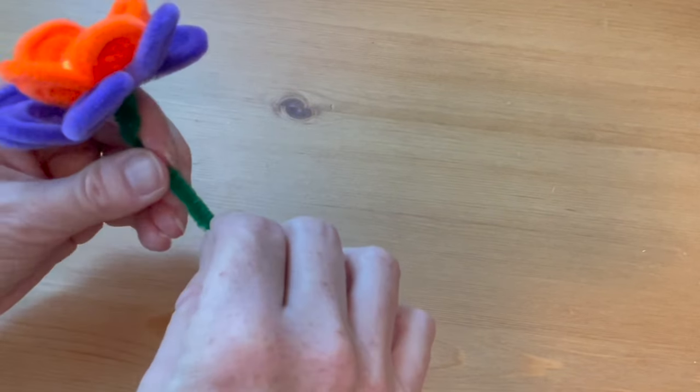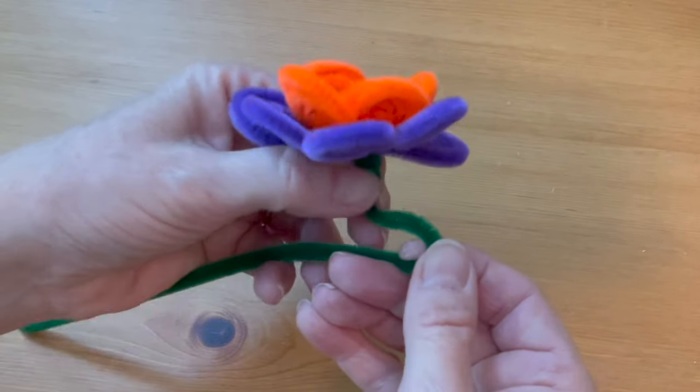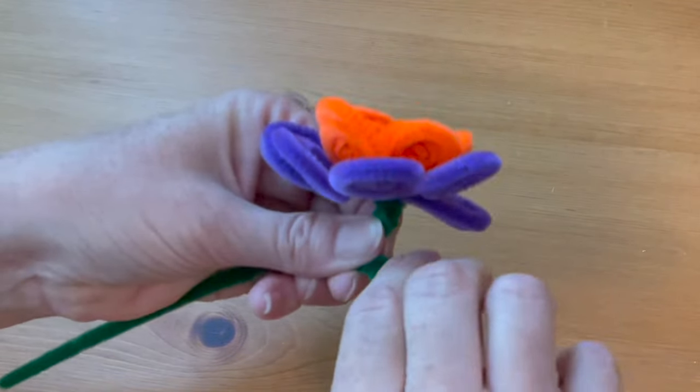Now you can form a leaf in the stem if you'd like. I like to do it up close to the top of the flower and make a small round leaf. So form a circle and give it a twist two times around to hold it in place.